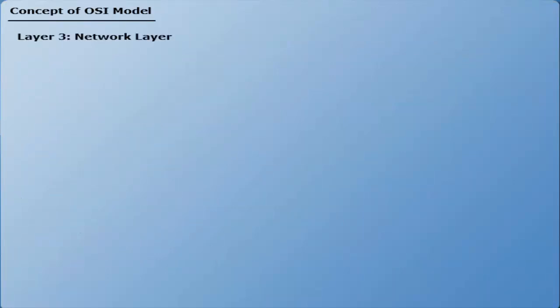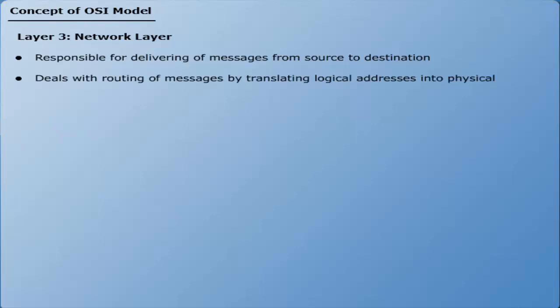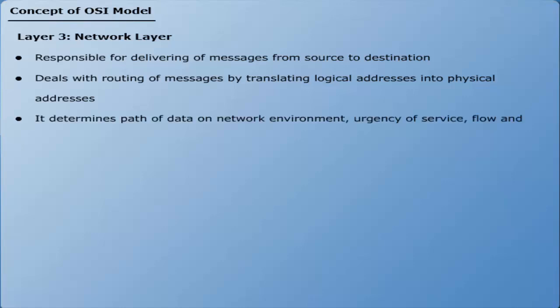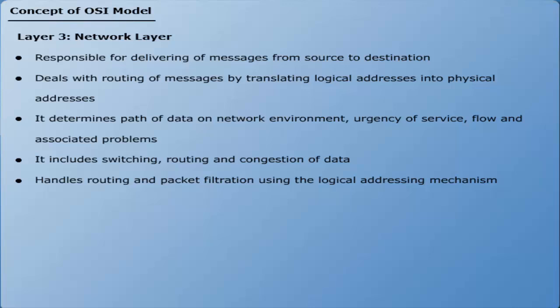Layer 3: Network layer — responsible for delivery of messages from source to destination. It deals with routing messages by translating logical addresses into physical addresses. It determines the data path based on network environment, urgency of service, and other factors. It also manages traffic flow and associated problems such as switching, routing, and congestion of data. The network layer handles routing and packet filtration using the logical addressing mechanism.